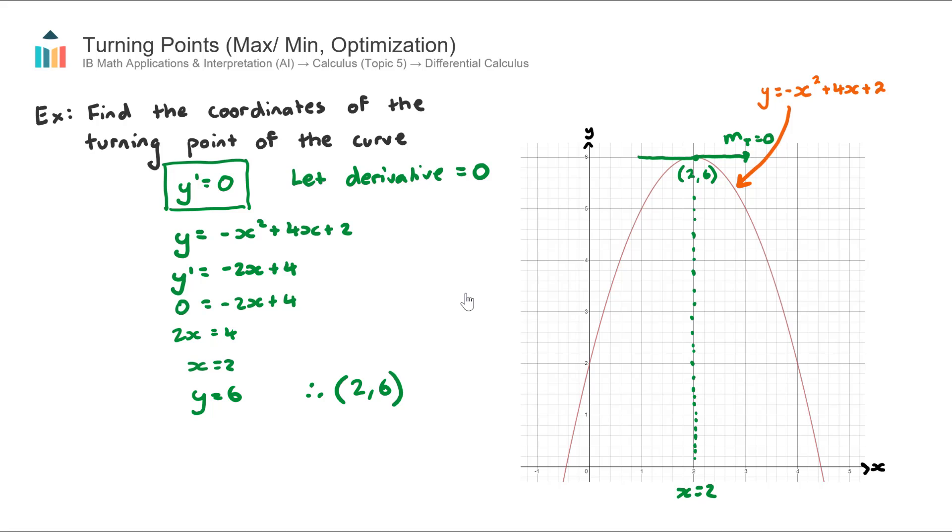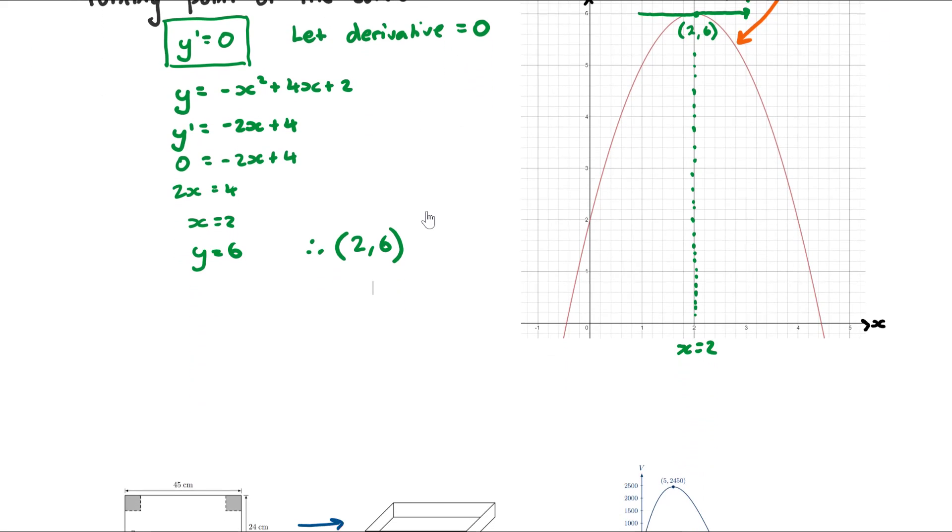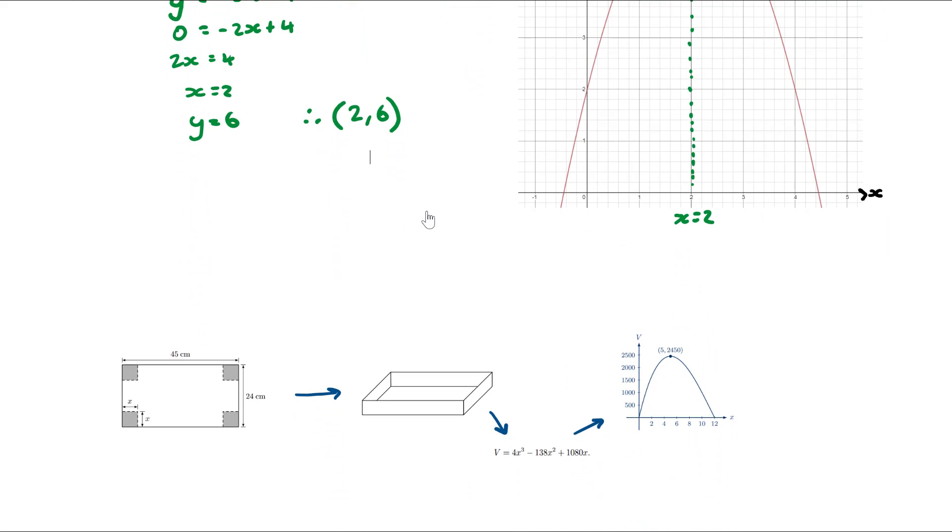So there's a demonstration there as to how we can use the derivative to find the turning point. Now this becomes very useful when we lead into these optimization type questions, and if you're an AI SL student these will most likely pop up at the end of paper 2 as one of the harder problem solving questions. There's a couple of great questions in the question bank and I brought one here. We have this storage box which is made from a rectangular piece of cardboard length 45 centimeters and 24 centimeters in width and the corners are cut out to create this storage box.